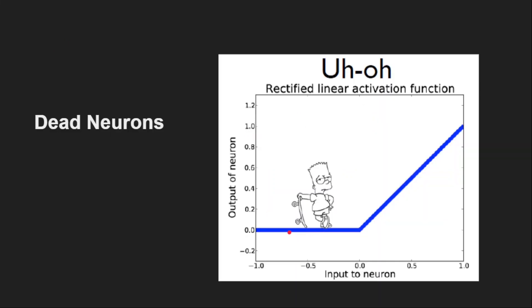But what about the negative side? What happens if the input is negative? Then the output is zero, right? That indicates that neuron is not useful for the next layer because the activation output is zero, then it is not contributing to the weighted sum. We call these as dead neurons.